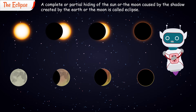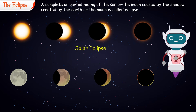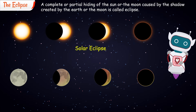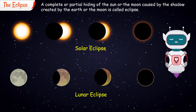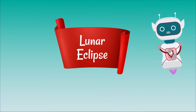If you look at the Sun and it appears dark, it is called a Solar Eclipse. The first type we will discuss is the Lunar Eclipse.